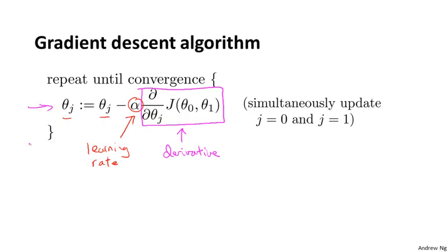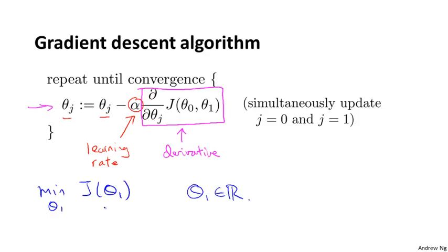In order to convey these intuitions, I want to use a slightly simpler example where we want to minimize a function of just one parameter. So we have a cost function j of just one parameter theta one, where theta one is a real number. This gives us 1D plots, which are a little bit simpler to look at. Let's try to understand what gradient descent will do on this function.